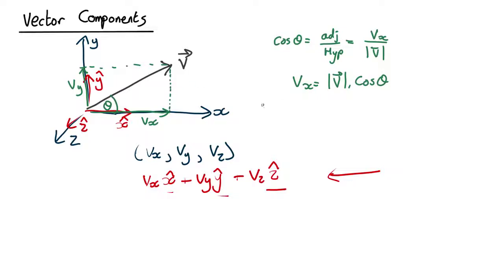Similarly, sin theta equals opposite over hypotenuse. The opposite of the triangle is this length here, which is the same as that length there. So that's vy over the length of the whole vector. So we have that vy equals the length of the whole vector times sin theta.